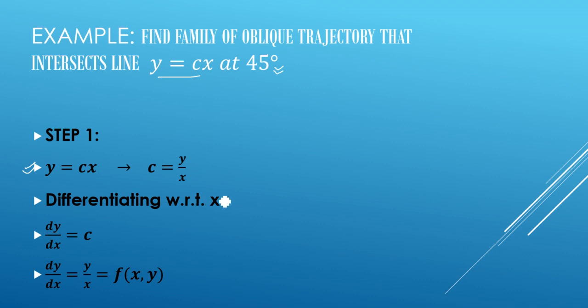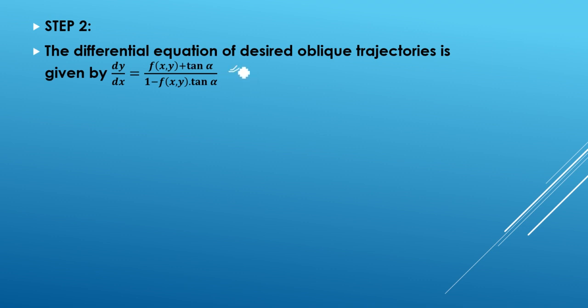Differentiating with respect to x, dy/dx = c. Now c value we have put, which is y/x. So dy/dx = y/x = f(x, y). Step 2: Now we have just put values in it. Putting f(x, y) = y/x and theta = 45 degrees.